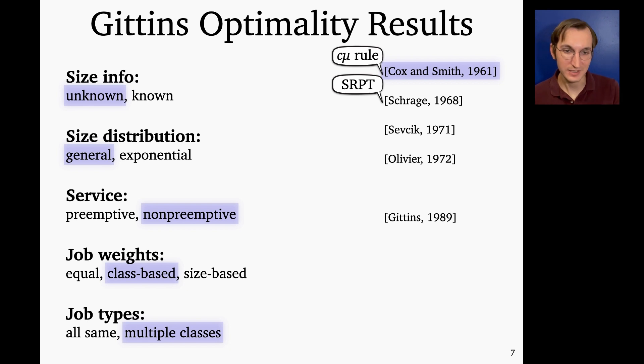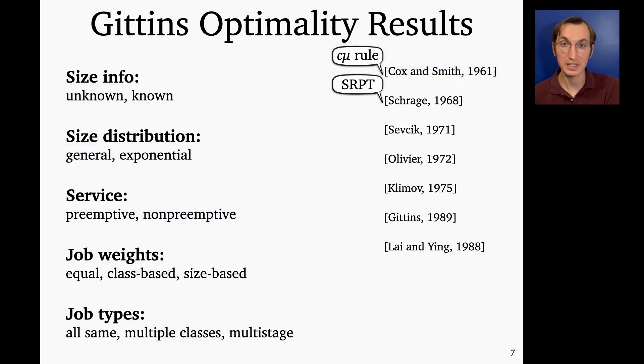Okay, and we can go even further than this. So for example, Klimov and Lai both studied versions of the scheduling problem, where now jobs don't just have multiple classes, they actually go through multiple stages. And you can think of it like a job cycles through multiple classes and spends some time in this class, then a bit more time in that class, and so on and so forth. And each of them proves a version of Gittins is optimal for their version of the problem.